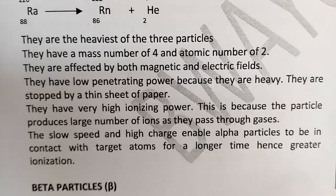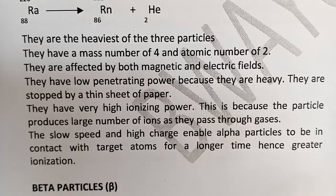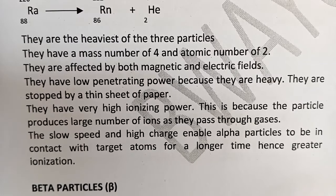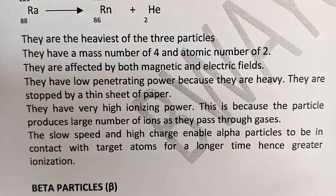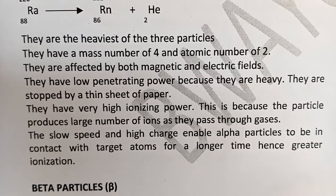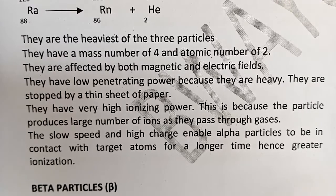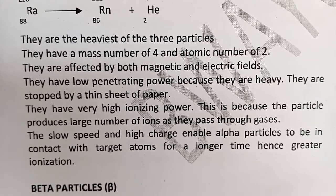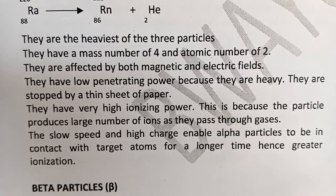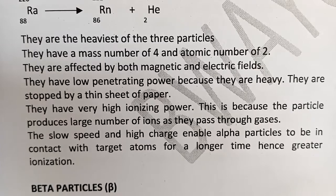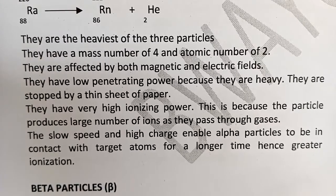Alpha particles have very high ionization power. This is because the particles produce a large number of ions as they pass through gases in air. Due to their charge of positive two, they ionize particles electrostatically as they pass through air. Their slow speed and high charge enable the alpha particles to be in contact with target atoms for a longer time, hence greater ionization.